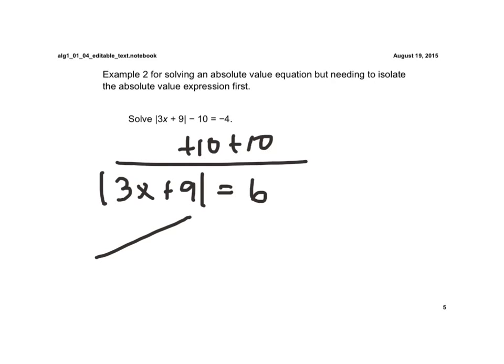And now we're ready to break this up into its two separate equations. So we have 3x plus 9 is going to equal 6, and 3x plus 9 is going to equal a negative 6.